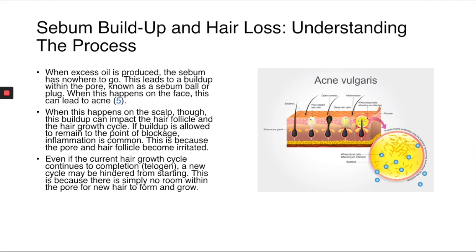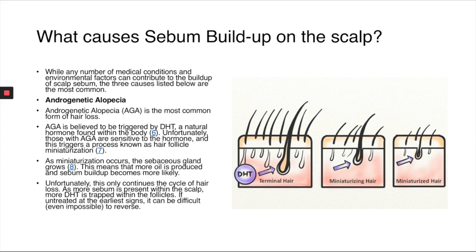If buildup is allowed to remain to the point of blockage, inflammation is common because the pore and hair follicle become irritated. Even if the current hair growth cycle continues to completion through the telogen phase, a new cycle may be hindered from starting simply because there is no room within the pore for new hair to form and grow.